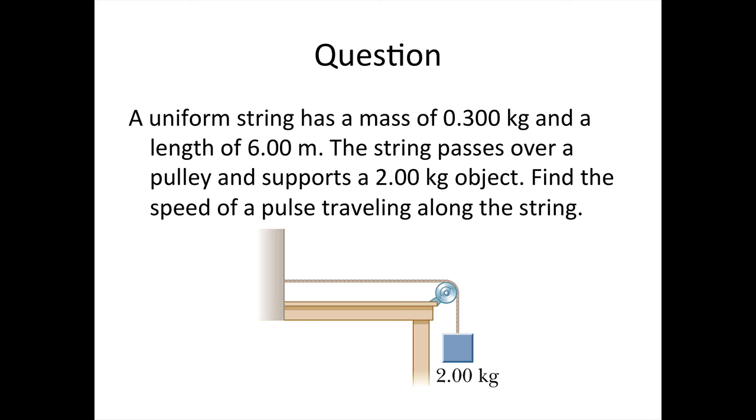Here's a fairly easy question for you to practice using the equation that we've just derived. A uniform string has a mass of 0.300 kilograms and a length of 6.00 meters. The string passes over a pulley and supports a 2.00 kilogram object. Find the speed of a pulse traveling along the string.